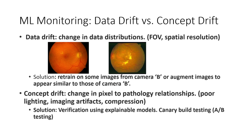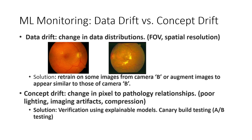A canary build is the setup where you already have one ML model deployed, and you use your new ML model — which is a variant that has already been trained on some images from camera B — in shadow mode. You take the input from users but run the new model in shadow mode to quickly verify if it is doing what it is supposed to do. These are some ways to detect data drift and concept drift.